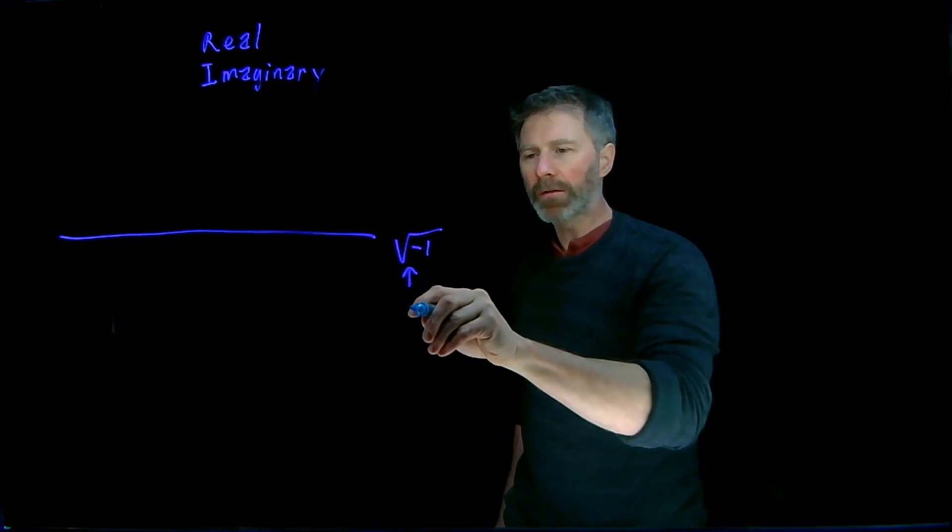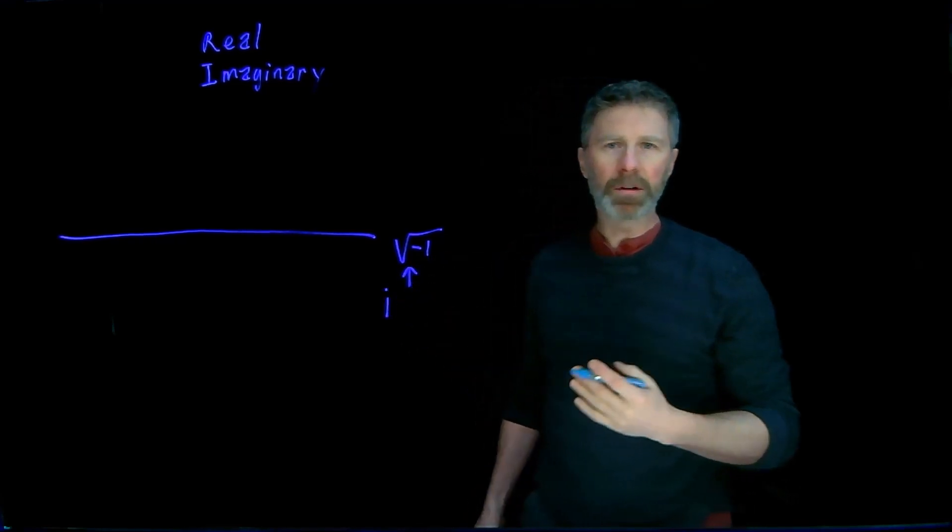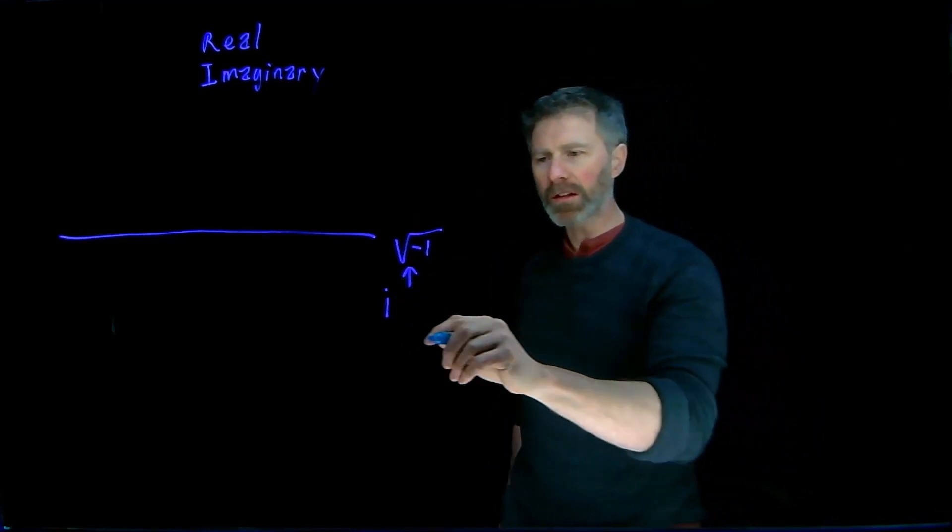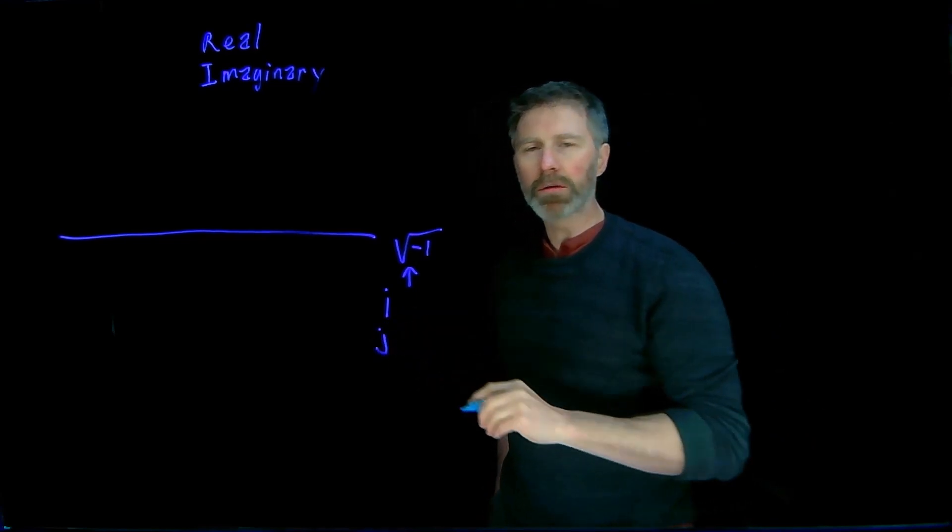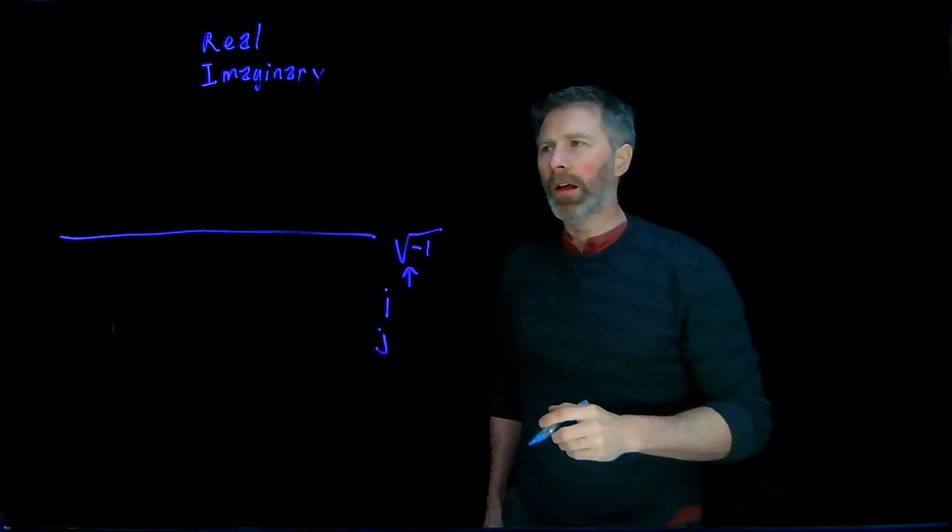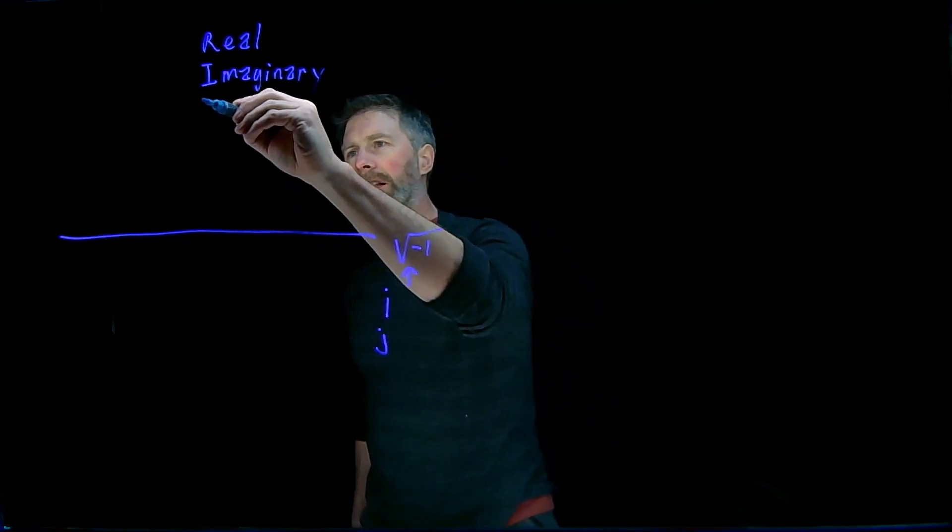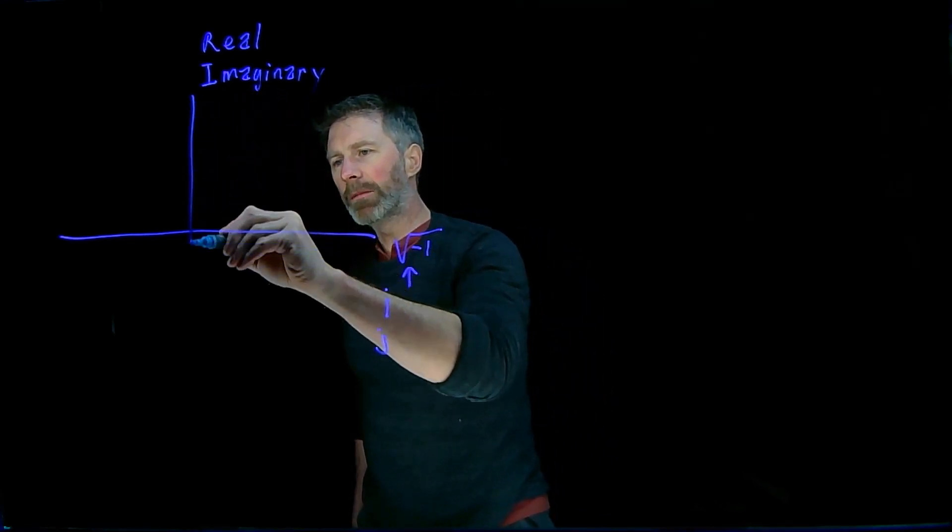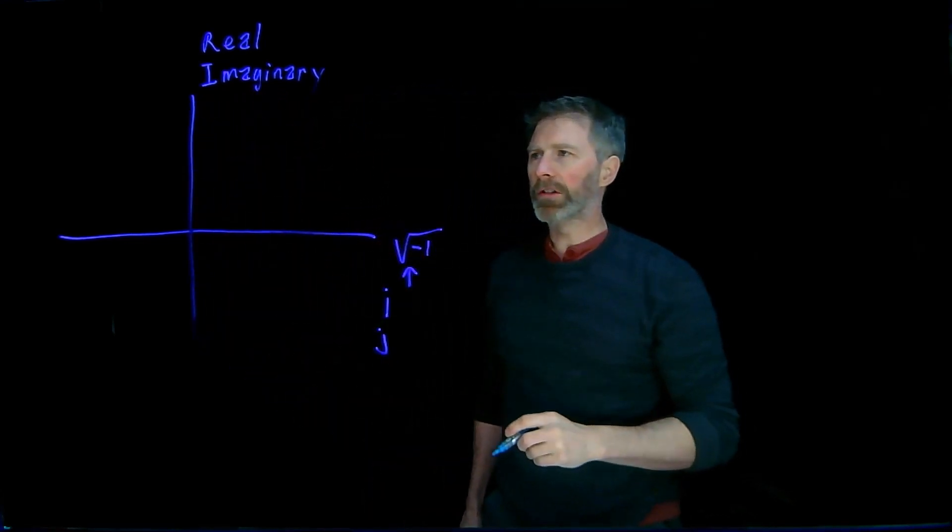And it is often abbreviated as the letter i, which is commonly used in math or physics, or the letter j, which is used more in electrical engineering. And the imaginary part is orthogonal to the real part, and so it is drawn as a number line in the vertical direction.